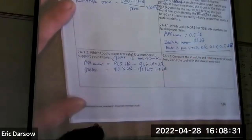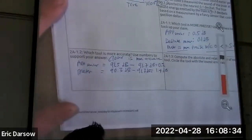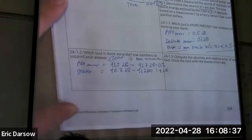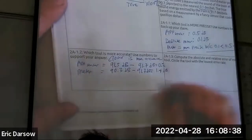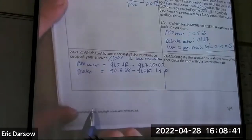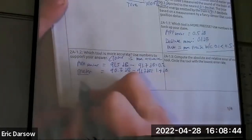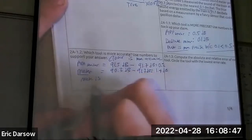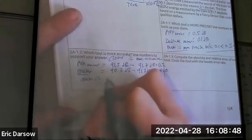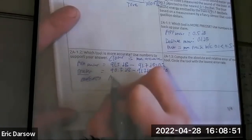In accuracy, do we want smaller or bigger differences? Smaller — we want to be closer to the real value. So the app is more accurate since its measured value is only 0.2 decibels from the accepted value.